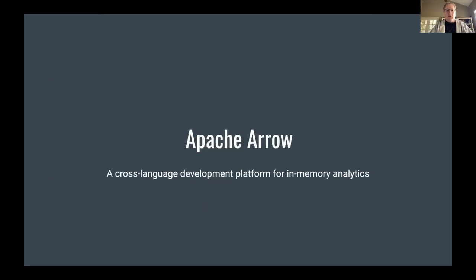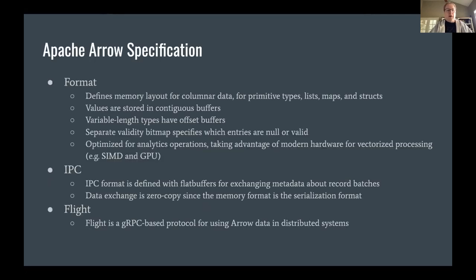So what is Apache Arrow? If you go to the website, it describes itself as a cross-language development platform for in-memory analytics. Primarily there's a specification made up of three parts. There's what's referred to as the format, which defines a memory format for columnar data, covering all data types you'd expect — from primitives to complex types like list, map, and struct. To distill it down, it's basically about using contiguous buffers in memory to represent data.